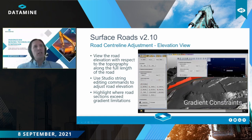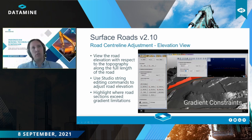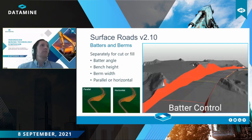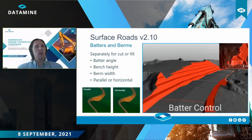In addition to highlighting areas that violate maximum gradient, I can also ask it to highlight areas that violate a maximum changing gradient. For the batters and berms step, I can separately specify for both cut areas and fill areas the batter angle, bench height, and berm width. Those berms can be either parallel to the road center line or horizontal at a fixed RL. Here's a demonstration of different parameter settings and how that might look for a given road design.